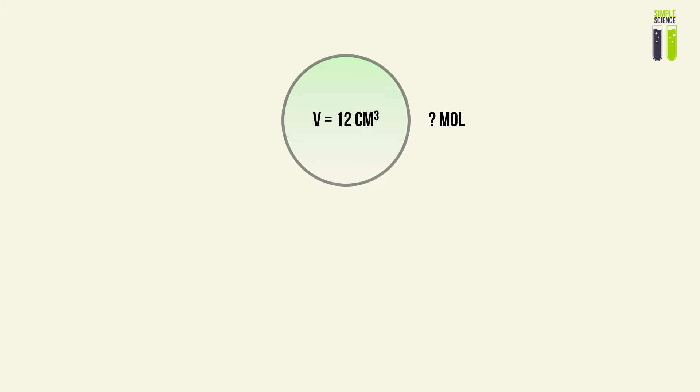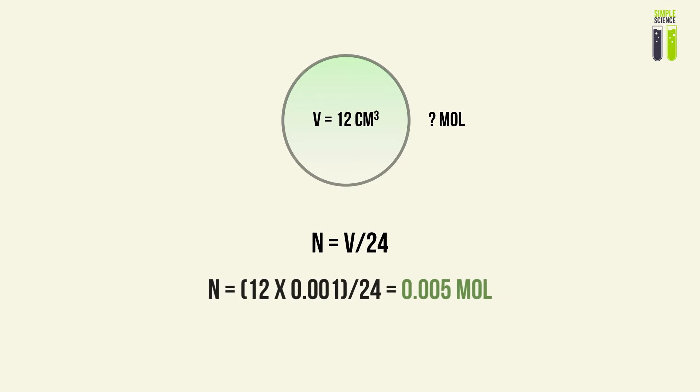For example, if you're asked to find the number of moles of a particular gas whereby the volume is 12 cm³, you convert the volume into dm³ and then divide by the molar gas constant. By doing this you will get a value of 0.0005 moles. This is a very basic one or two mark question.